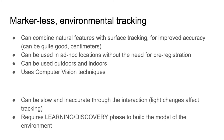Markerless environmental tracking can combine natural features with surface tracking, making it appropriate for indoor use. It can be used in ad-hoc locations without needing to know where it will be deployed. It works both outdoors and indoors, and is especially suitable indoors where floors, ceilings, and walls are easy to track using computer vision. Disadvantages include potential slowness and some inaccuracy if lighting conditions change or if you move too much, because the model needs to be rebuilt. There's also a learning and discovery phase before the system can be used.